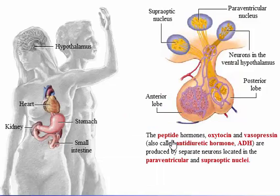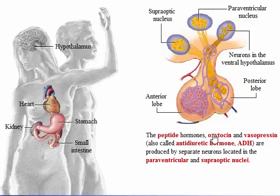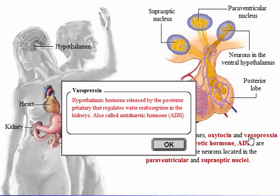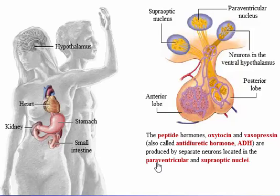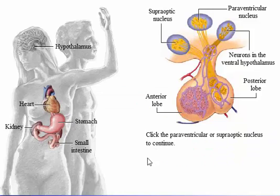The peptide hormones oxytocin and vasopressin — also called antidiuretic hormone (ADH) — are produced by separate neurons located in the paraventricular and supraoptic nuclei. Click the paraventricular or supraoptic nucleus to continue.